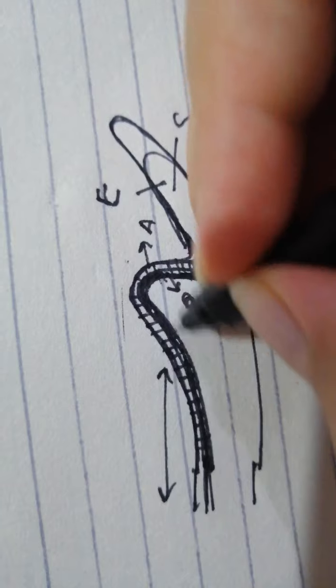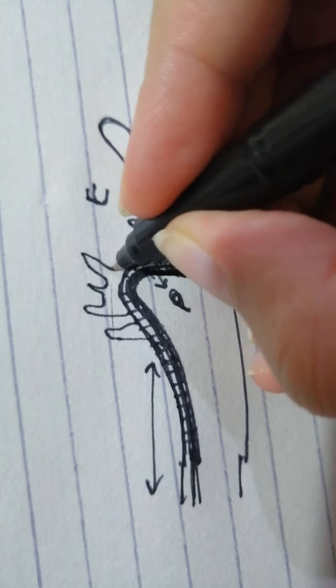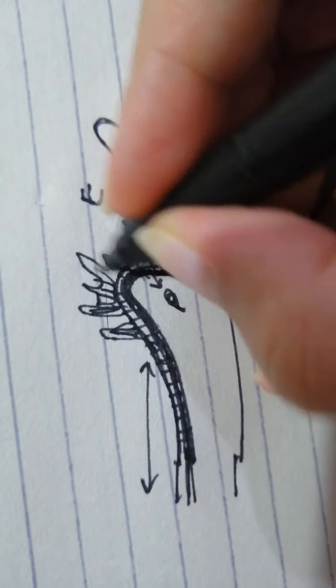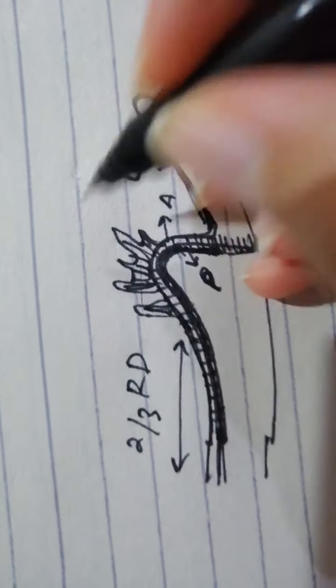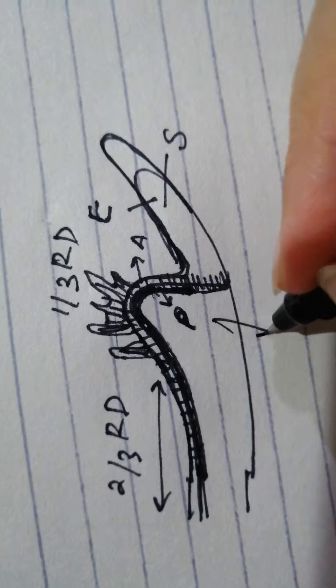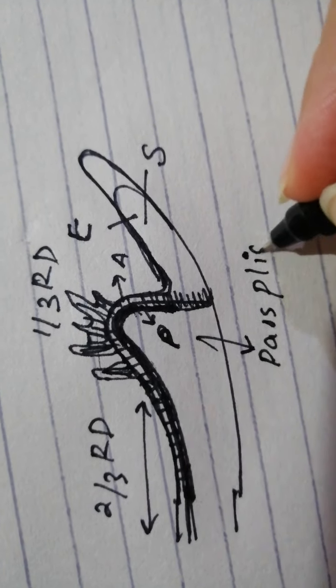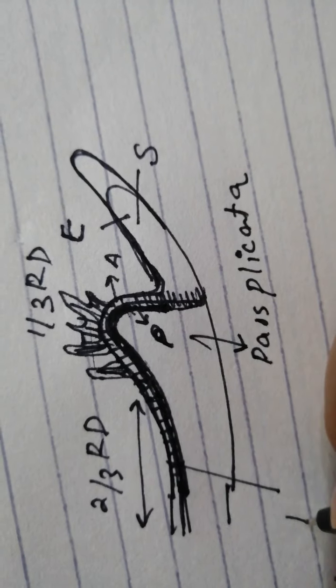Why is this the pars plicata? Because the epithelium is actually making these processes known as the ciliary processes which I have not shown but I am showing now. But the posterior two-third portion, the pars plana does not show these. Which is why this portion is the pars plicata and this portion is the pars plana.